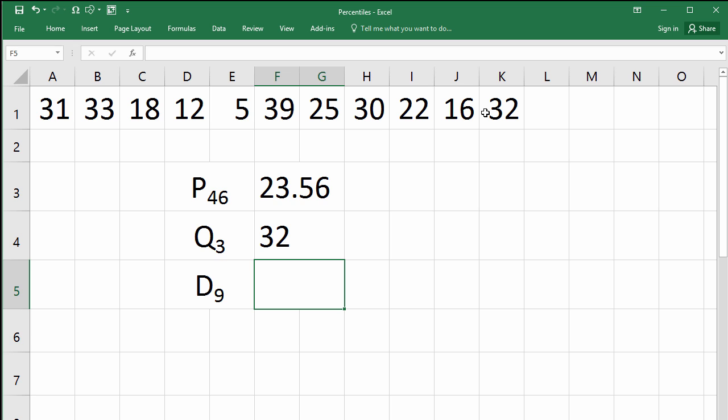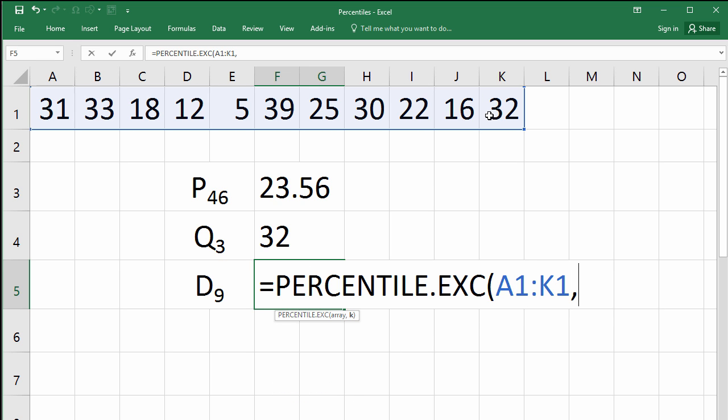For the ninth decile, which is the same as the 90th percentile, we type equals percentile exclusive, highlight the data, comma, 0.9 for the 90th percentile, and enter.